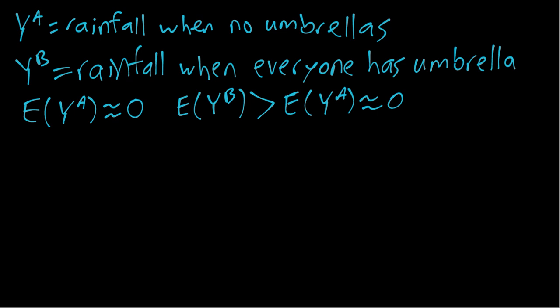For example, if there's a drought, we can't suddenly make it rain if we just all go outside and open up umbrellas. There's no causal effect.